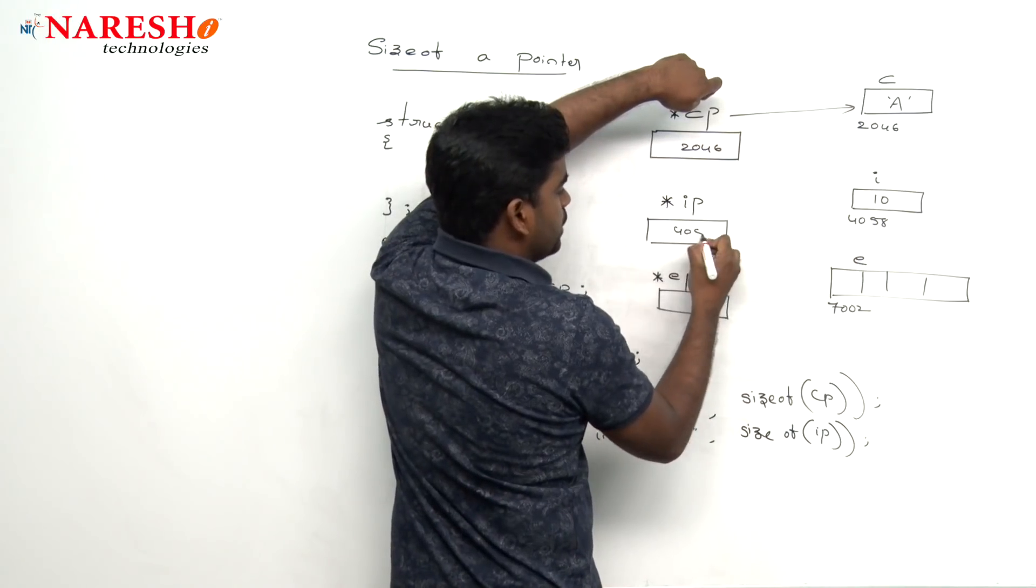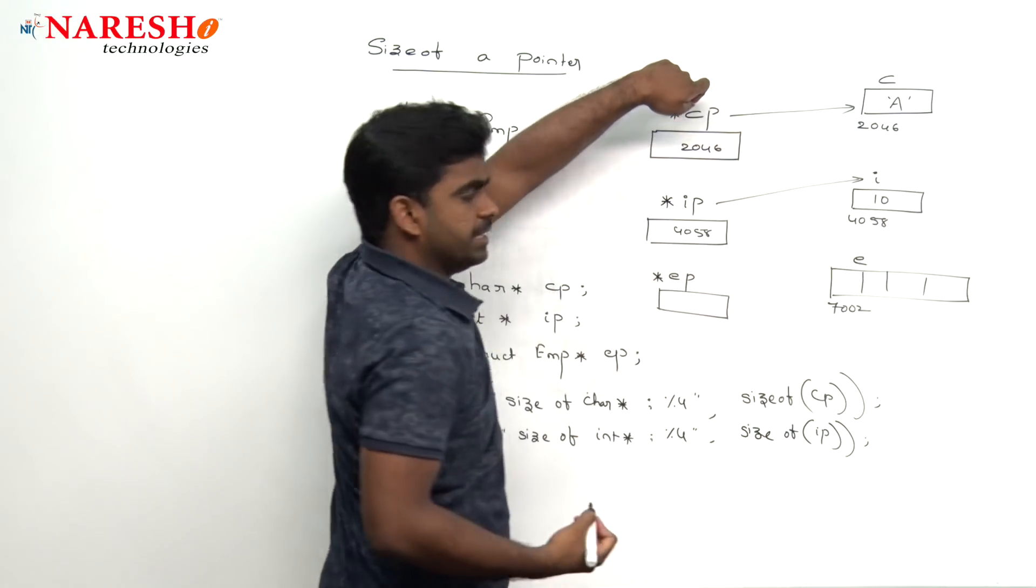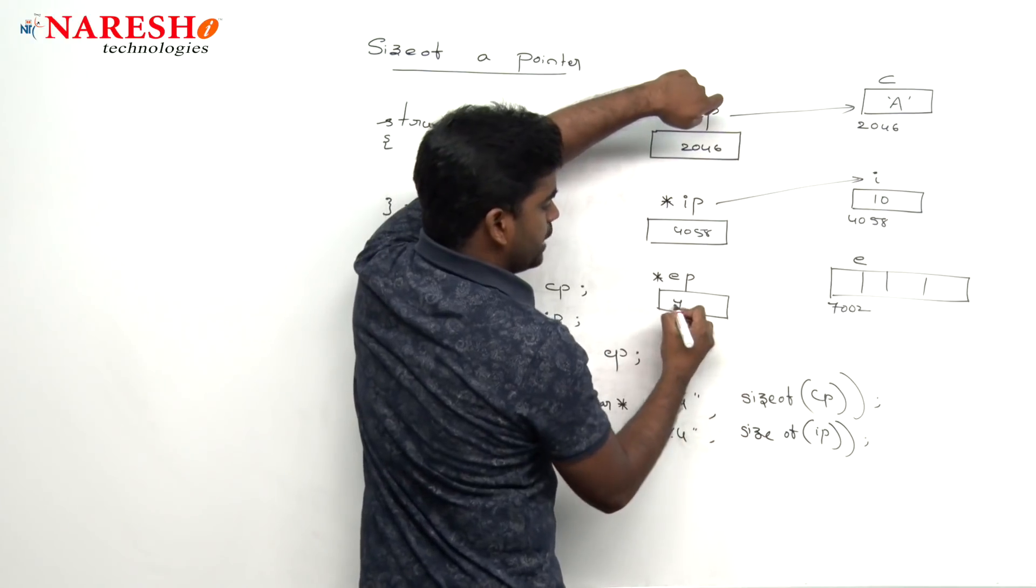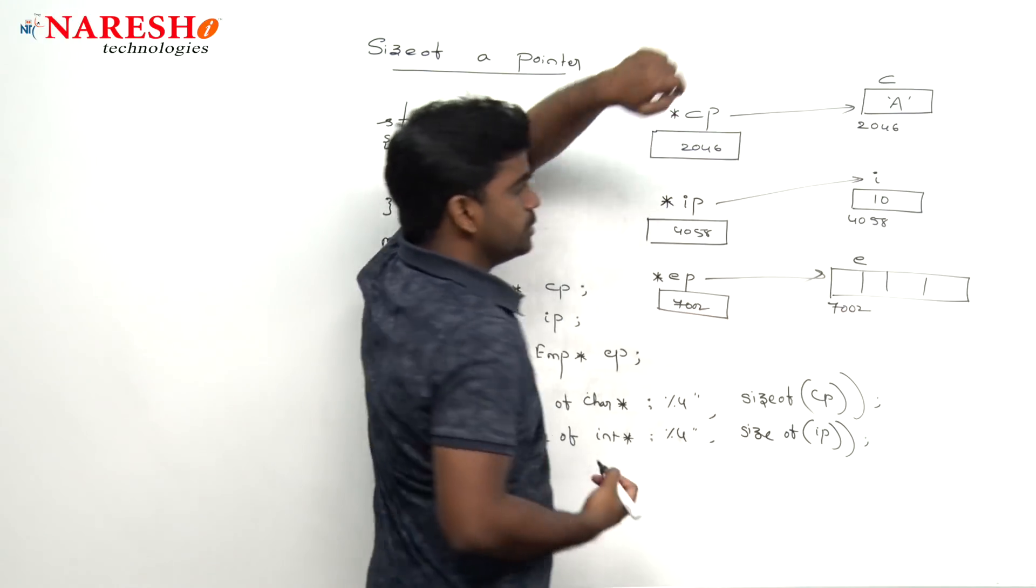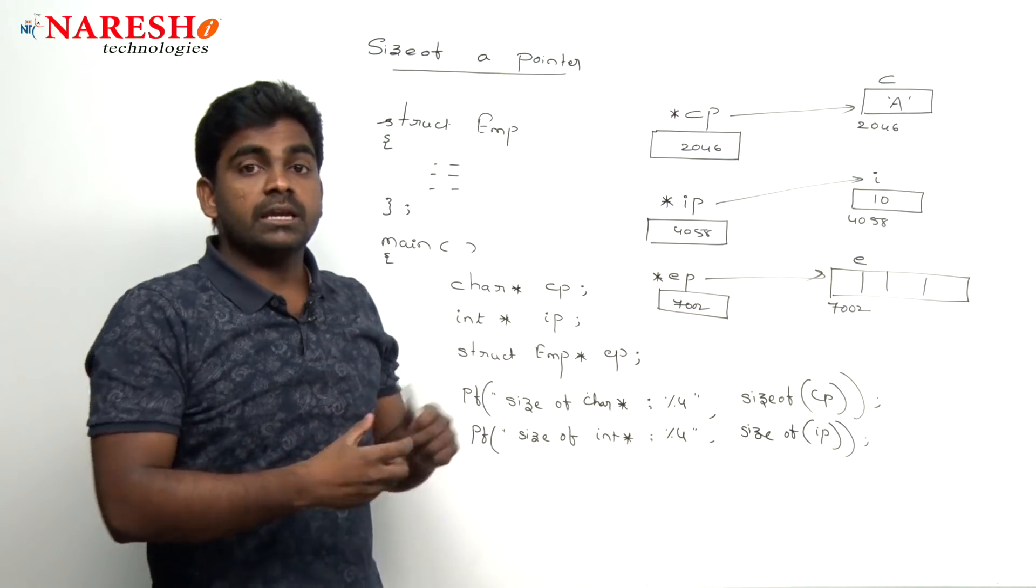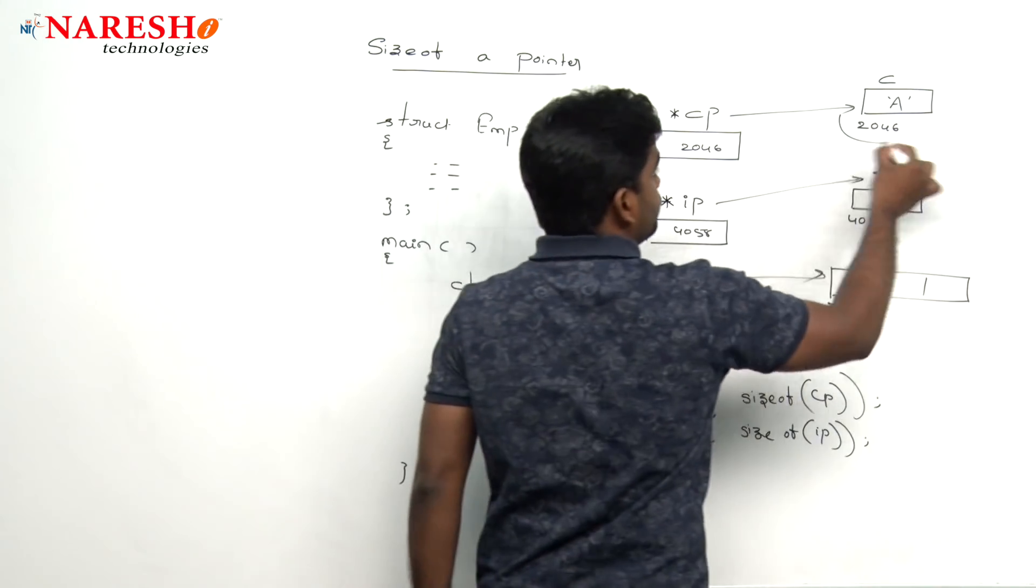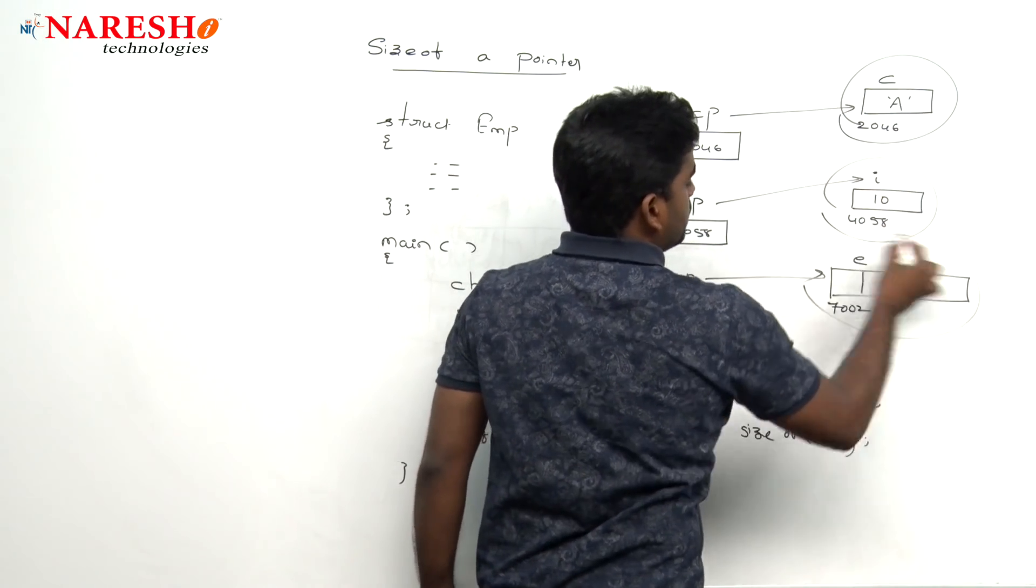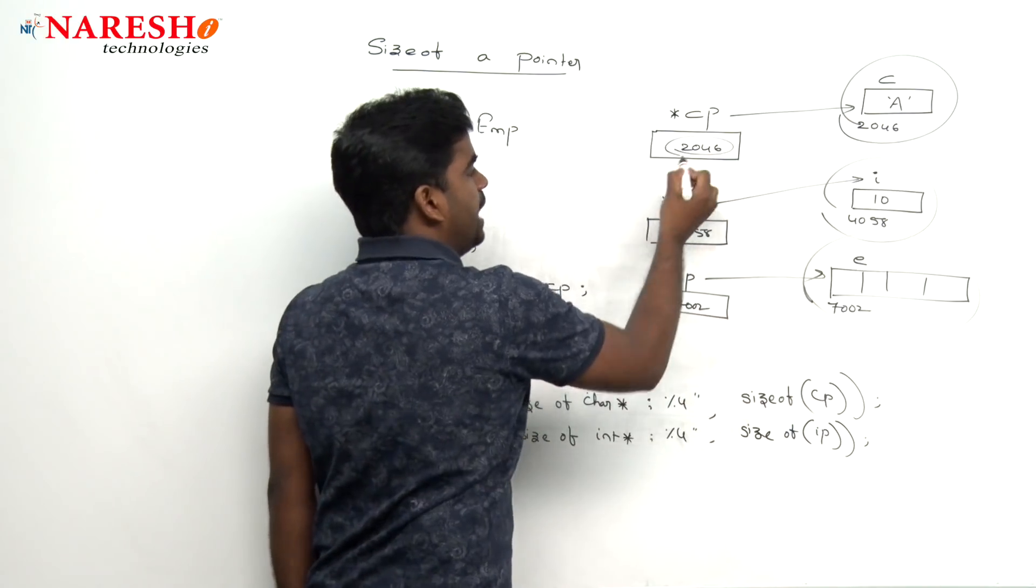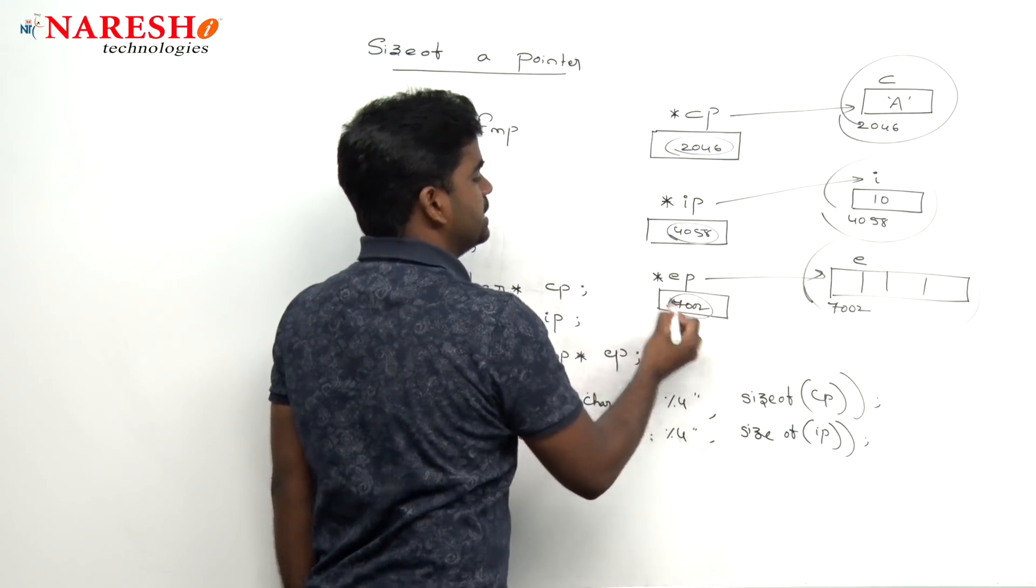Integer pointer is holding that 4058 and it is pointing. And here employee pointer is holding 7002 and it is pointing. Here we are not checking the size of the data, we are checking that size of the address. Address is always an integer.